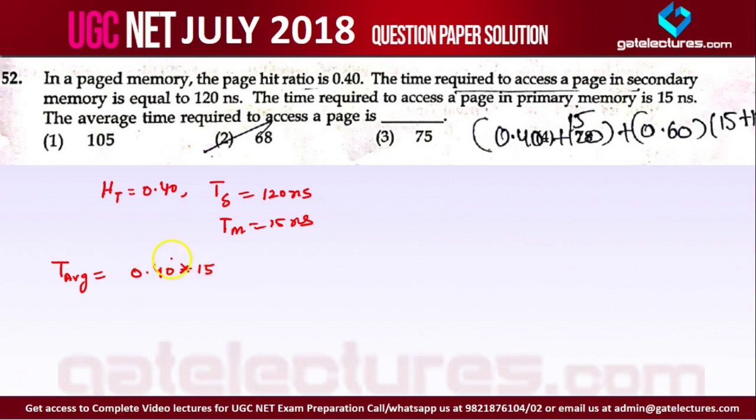Simply if the page is found in main memory, you will access the page. But if the page is not found in main memory, that means that is a miss. 60% of the time the page is not found in the main memory, then you have to search for the page in the secondary memory. And CPU will never access the page directly from secondary memory. It will first take the page from the secondary memory and bring it into the main memory, then it will access the page from the main memory.